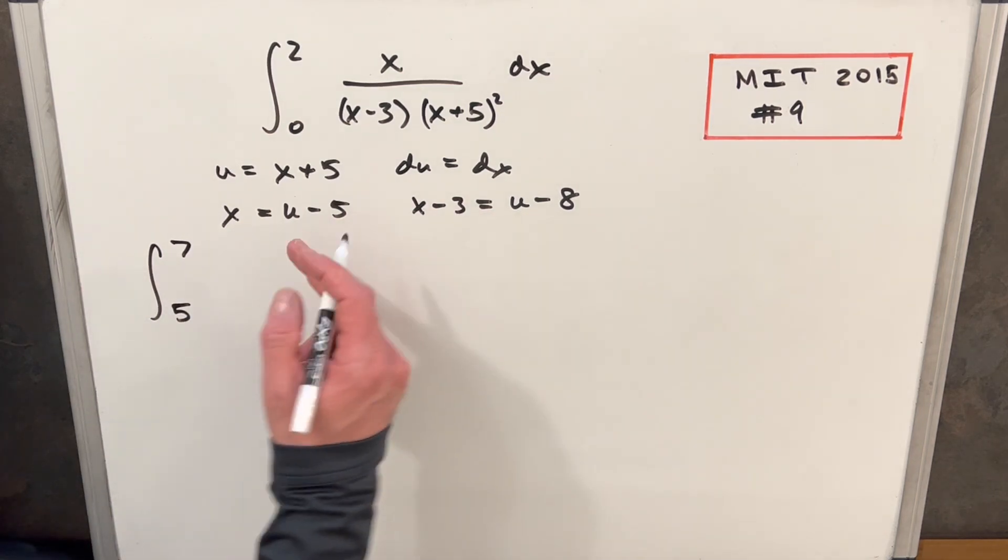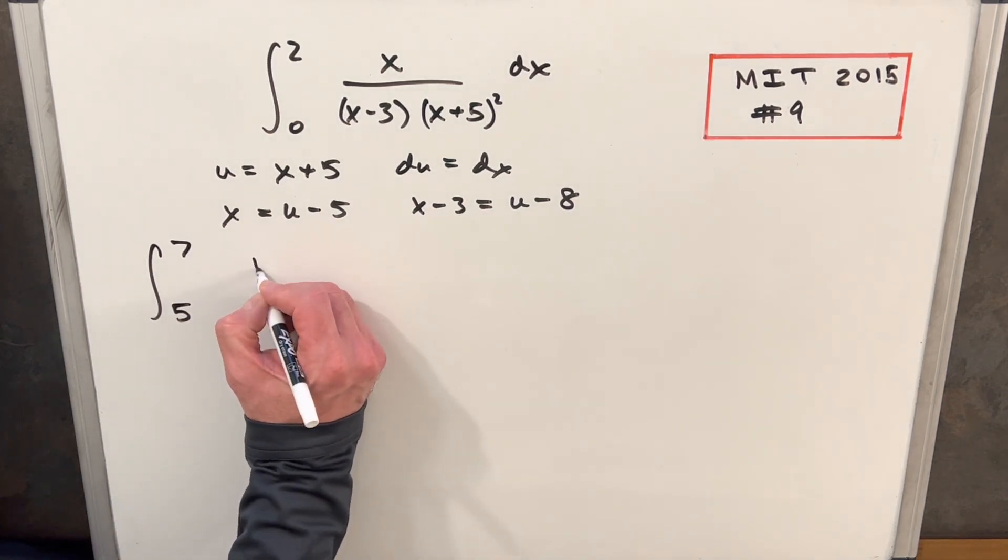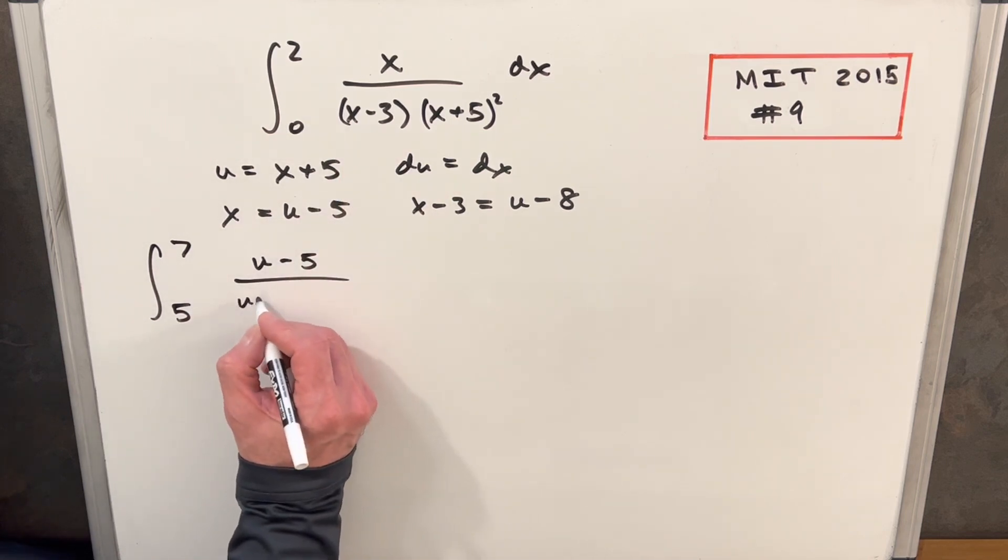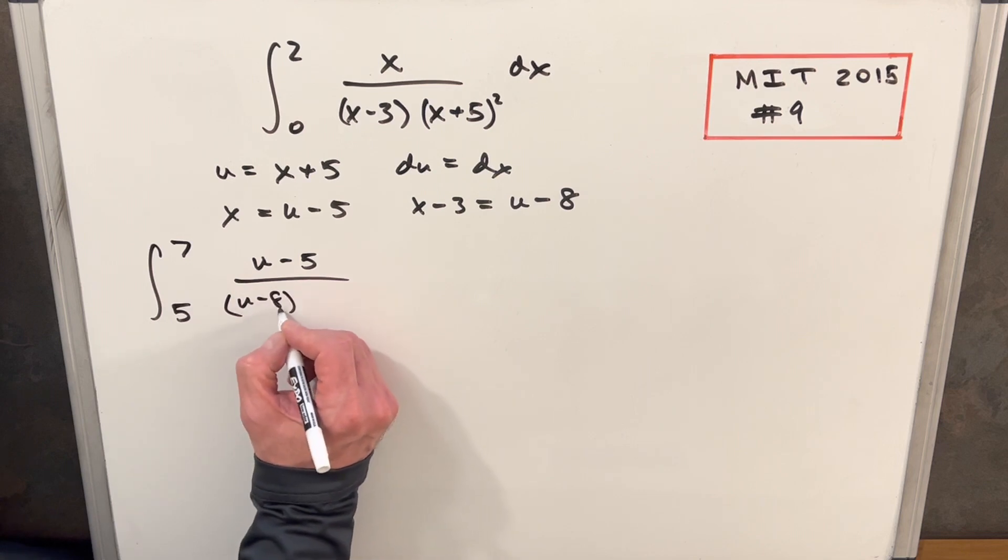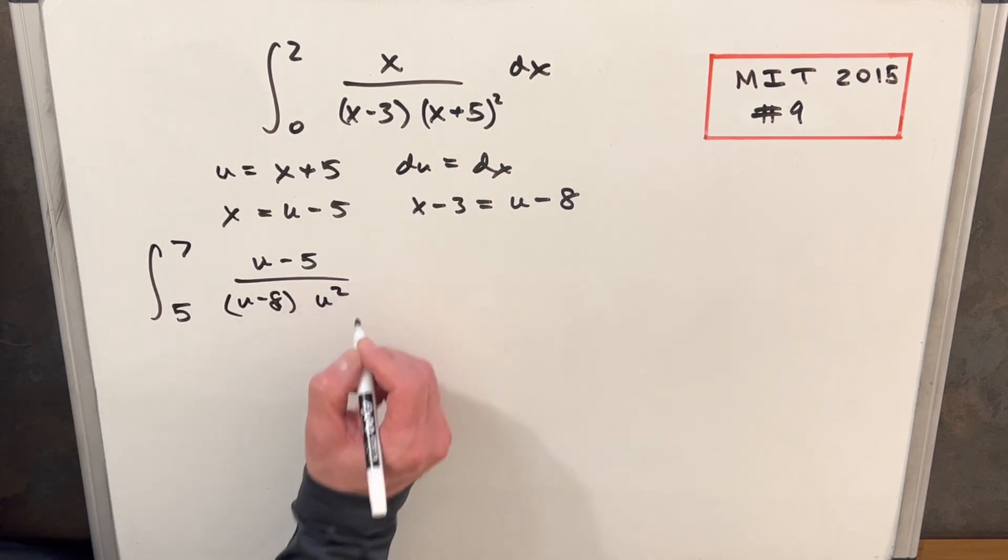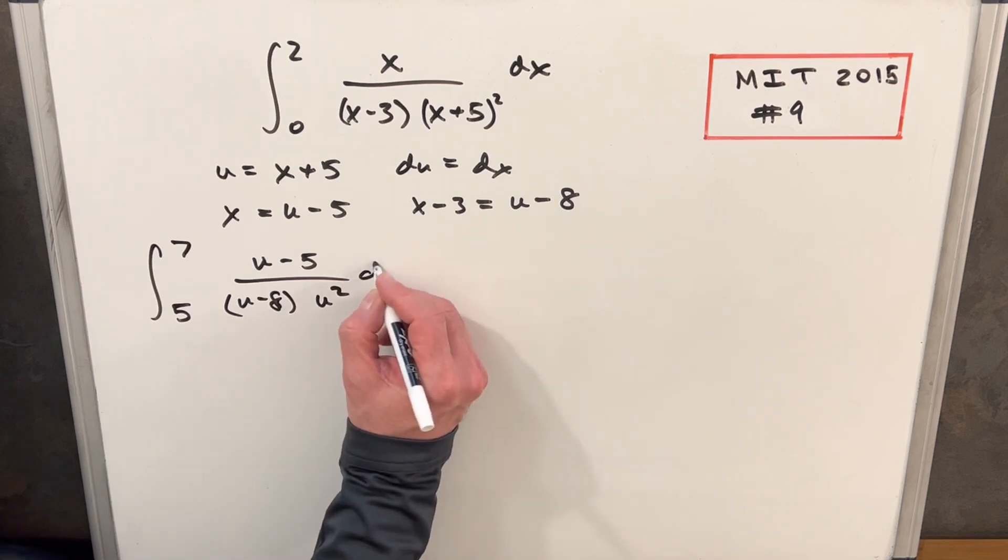And we'll plug in, we have all our values. So for our numerator, for x, we're going to have u minus five. Then for x minus three, we're going to have u minus eight. And then for x plus five, we just get our u squared. I think that's why I like it, maybe just turning that into a u squared.